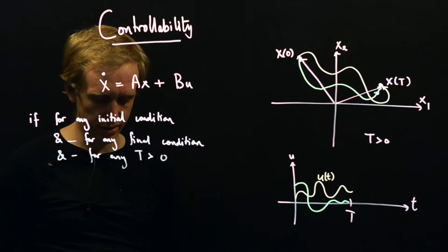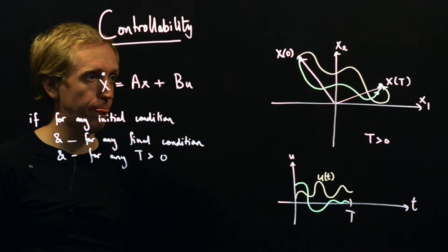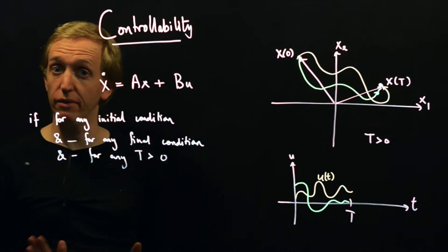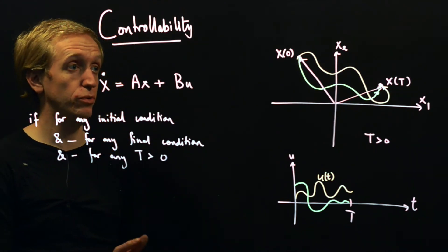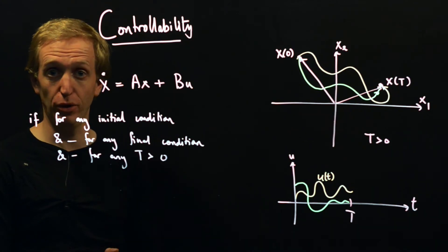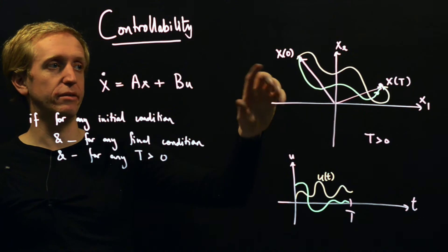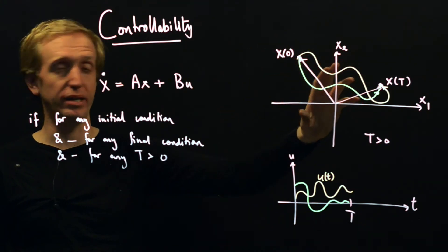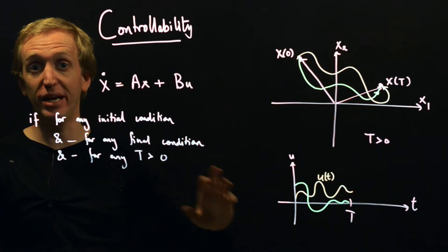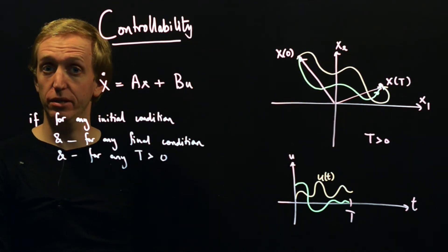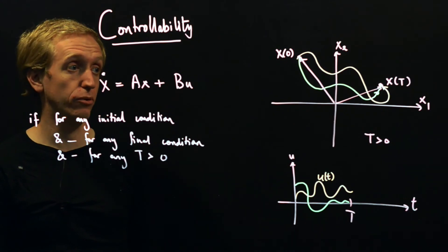Related are some other names for things, and one we'll have use for soon is the idea of being controllable to the origin. So maybe you don't ask can I from any starting point get anywhere else. You could ask from any starting point can I get to the origin? And if that's the case, then you would say the system is controllable to the origin.